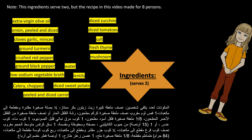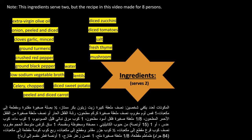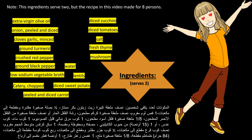Ingredients for two servings: ½ tablespoon extra virgin olive oil, ½ small onion peeled and diced, 1 clove garlic minced, ¼ teaspoon ground turmeric, a sprinkle of cayenne pepper or ¼ teaspoon crushed red pepper, ⅛ teaspoon ground black pepper, 1 cup low-sodium vegetable broth, 1 cup water, ¼ cup lentils or one 15 oz canned cannellini beans drained and reserved, 1 medium stalk celery chopped, ¼ cup diced pumpkin, ¼ cup peeled and diced carrot, ¼ cup diced zucchini, 3 oz diced tomatoes, ⅛ teaspoon salt, ¼ teaspoon dried oregano, 1 sprig of fresh thyme, and 1 oz button mushrooms quartered.